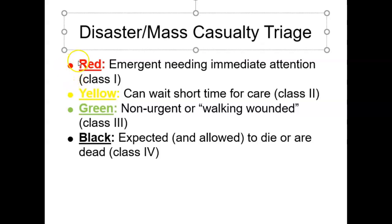The first classification is red, or emergent — patients who need immediate attention. Next, yellow — the patient can wait a short period of time before care. Green is non-urgent, also known as the walking wounded, where injuries aren't too severe. Finally, black — patients tagged black are expected and allowed to die, or are already deceased. The four classifications are red, yellow, green, and black.